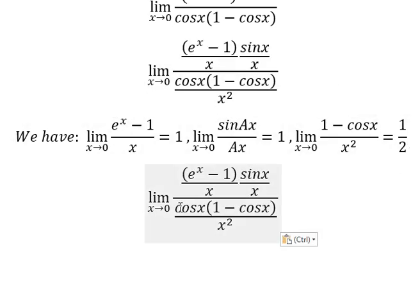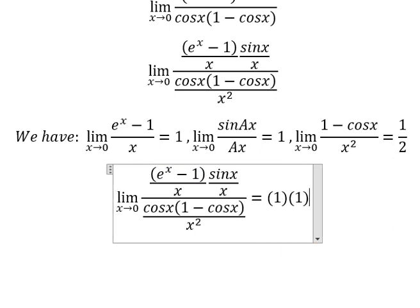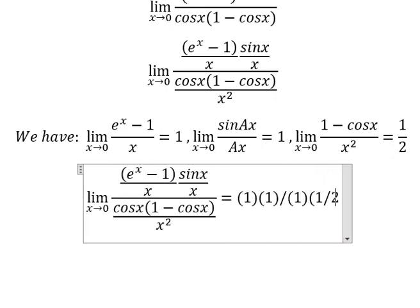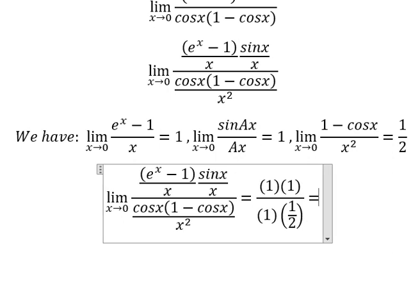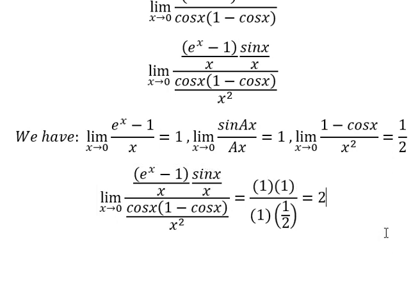In this situation, when x approaches zero, this one we have one times one, this one we have one over two. Cosine of zero equals one, and then we calculate the result.